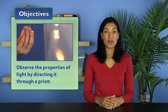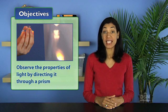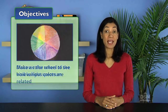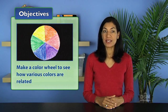In Activity 1, The Spectrum of Visible Light, students observe the properties of light by directing it through a prism. They first discover the colors of the visible light spectrum, then make a color wheel to see how various colors are related.